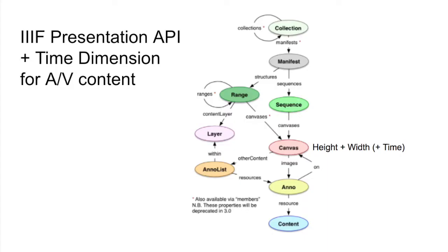The IIIF Image and Presentation APIs thus work together to present to the user a digital surrogate of a physical object, with the ability to manipulate, annotate, and otherwise more fully explore cultural heritage objects on the web. The IIIF community is currently working on extending the Presentation API to include AV materials, which will entail adding a time dimension to the Shared Canvas data model.